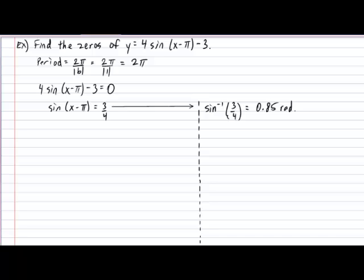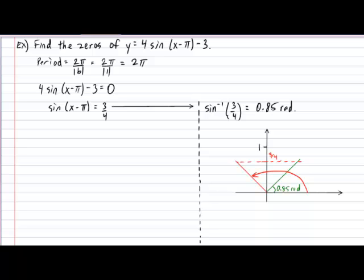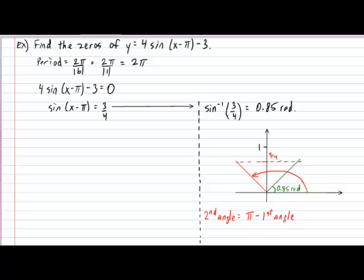In order to properly explain how to determine the second possible angle that can cause a y value of 3 over 4, we must show a little graphic. The following graphic shows the angle of 0.85 radians, which causes the y value to be equal to 3 over 4. As you can see from the graphic, the second possible angle that can cause a y value of 3 over 4 occurs on the other side of the y axis. Using the properties of trig points allows us to calculate that second possible angle by simply subtracting the first possible angle from pi — in other words, subtracting the first angle from 180 degrees. In our example, that will give us pi subtract 0.85 radians, giving us a second possible angle of 2.29 radians.